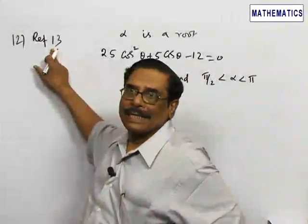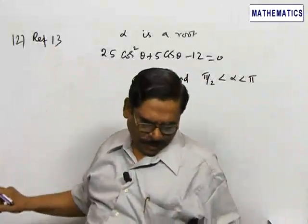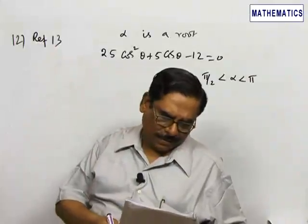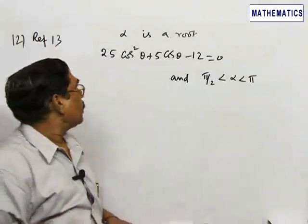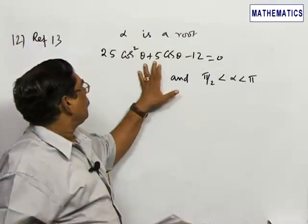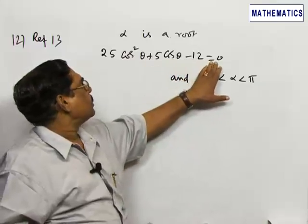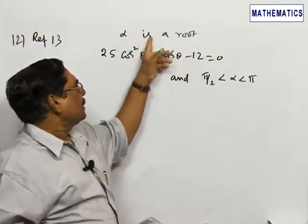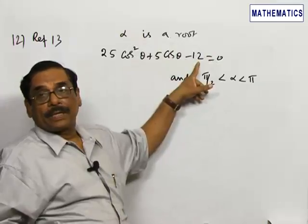Now we will go to problem number 13. The problem is: 25 cos squared theta plus 5 cos theta minus 12 equals 0, and alpha is a root of this equation. You are asked to find the value of sine 2 alpha.